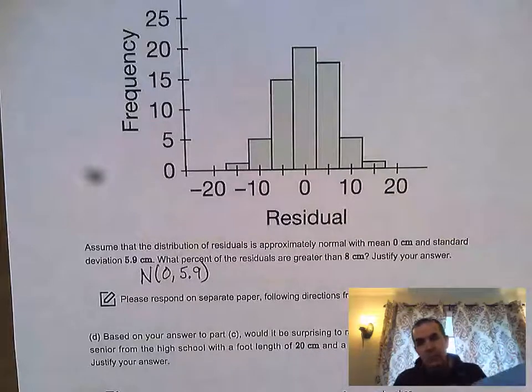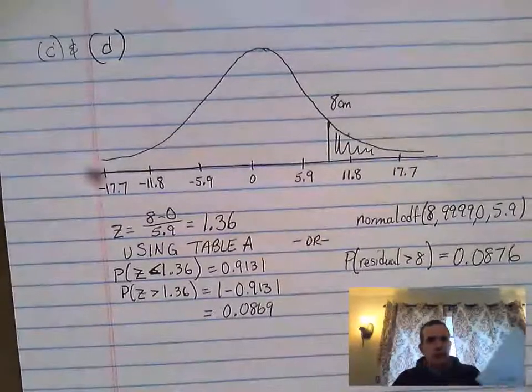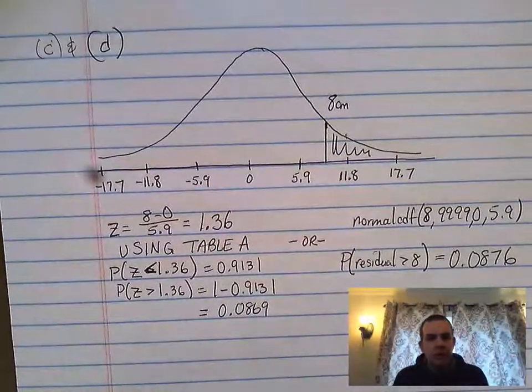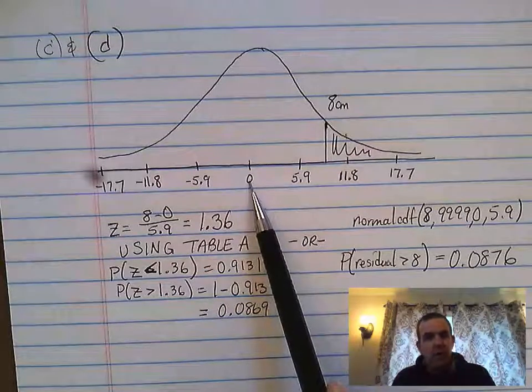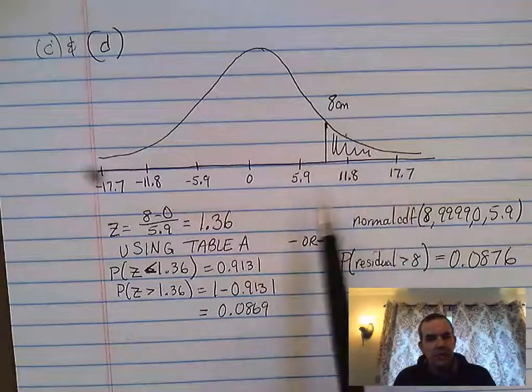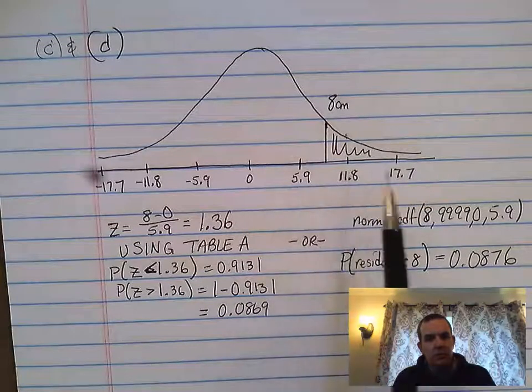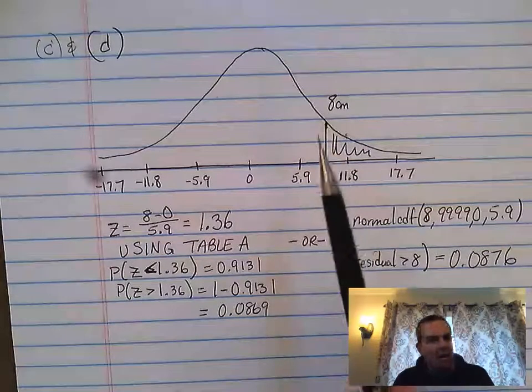What I went ahead and did, and what you should do to address a question like this, is you should draw the picture. So I'm going to draw the picture of the curve. It's a normal distribution centered at zero. And what I have done now is I've gone ahead and labeled all of the standard deviations: plus one, plus two, plus three, minus one, minus two, minus three. And then I went ahead and put eight because that's what the question said, greater than eight.